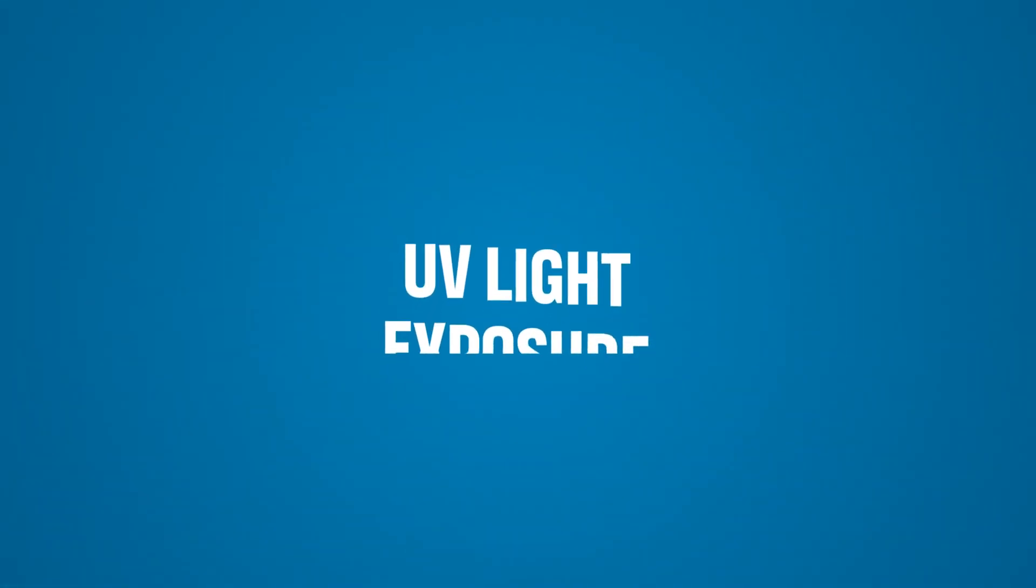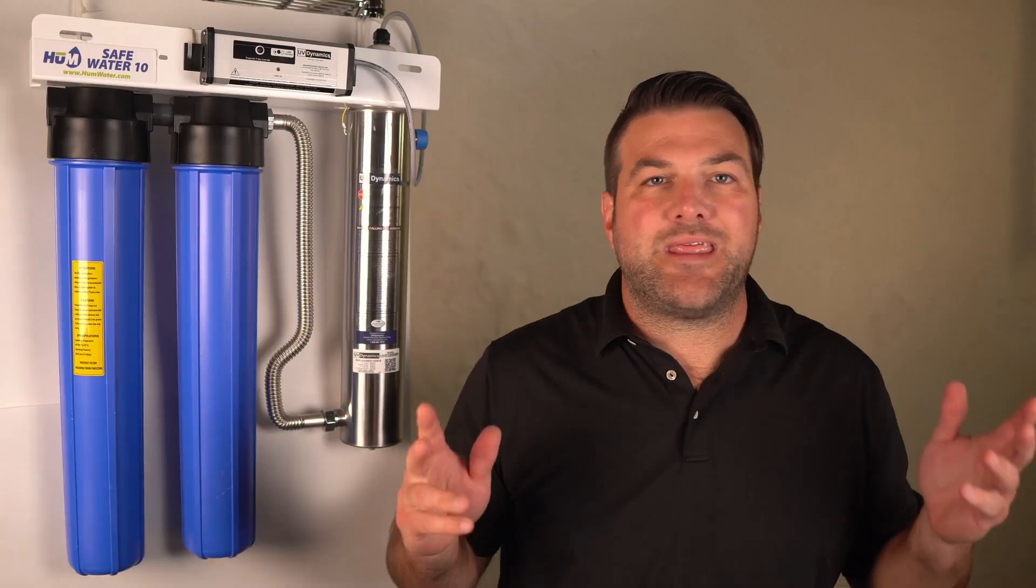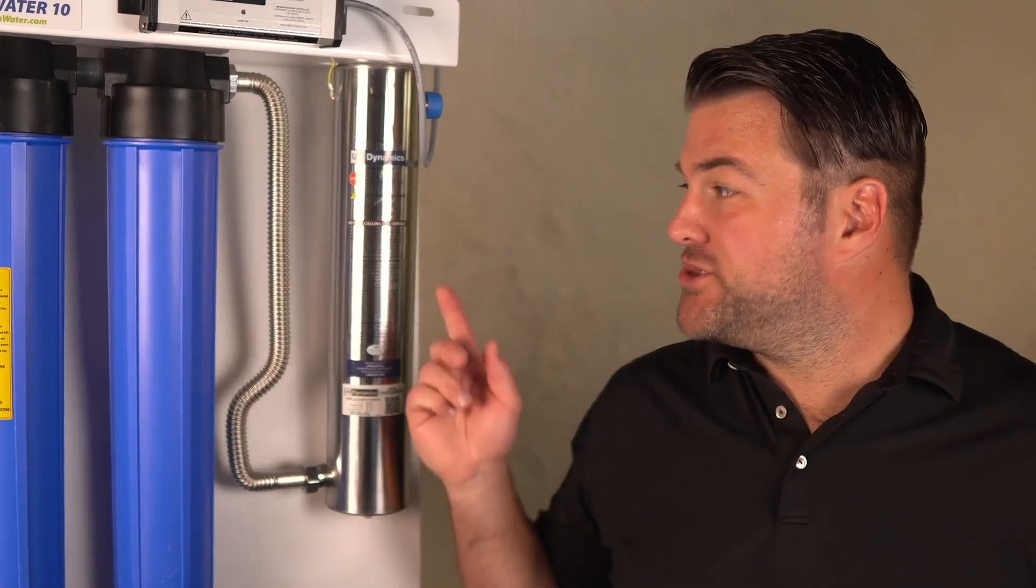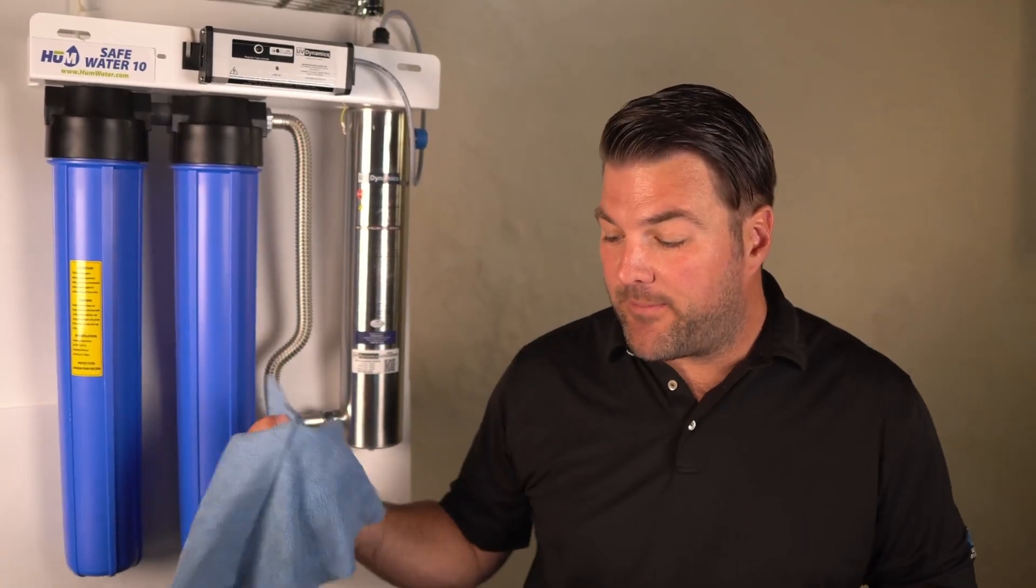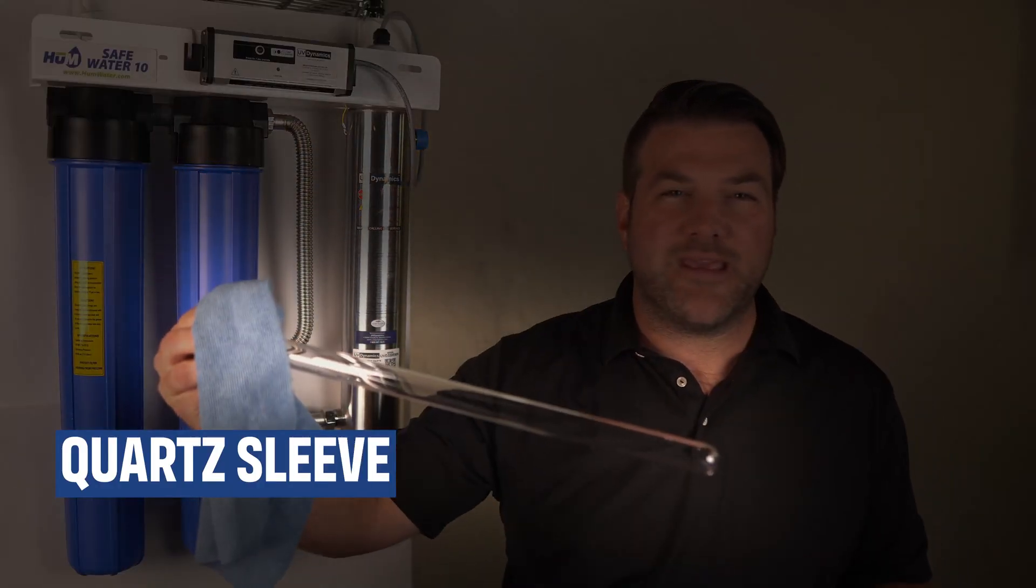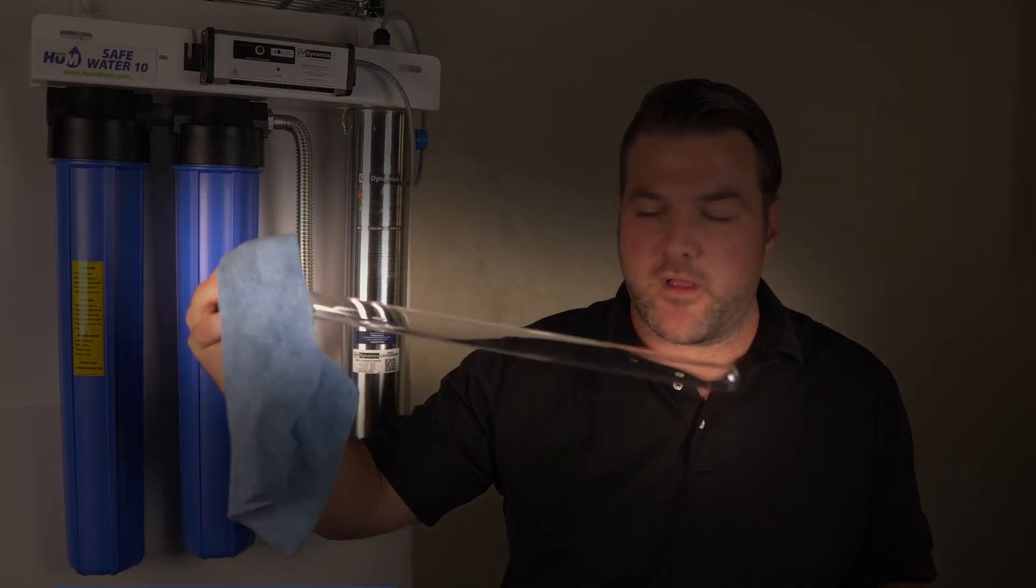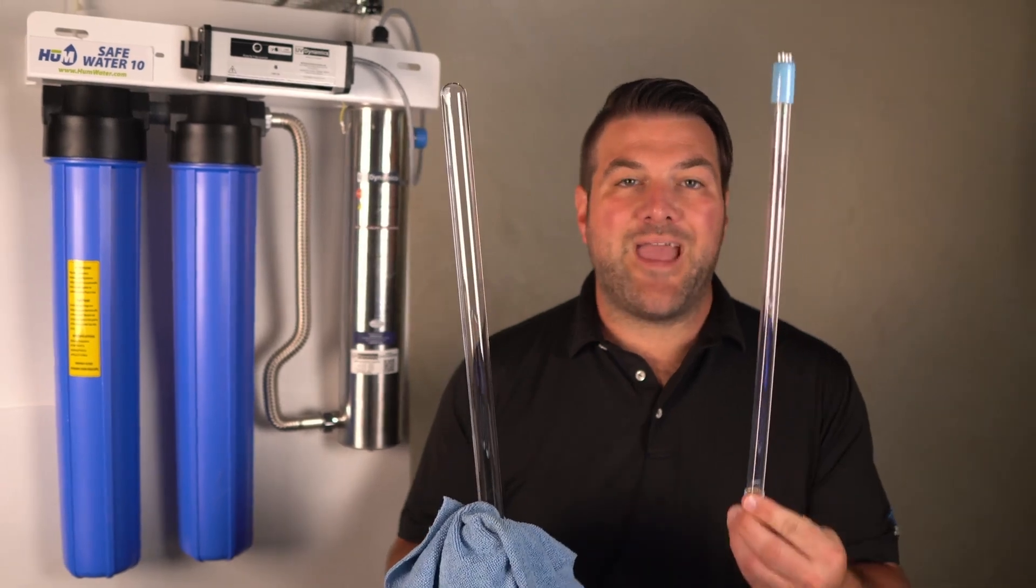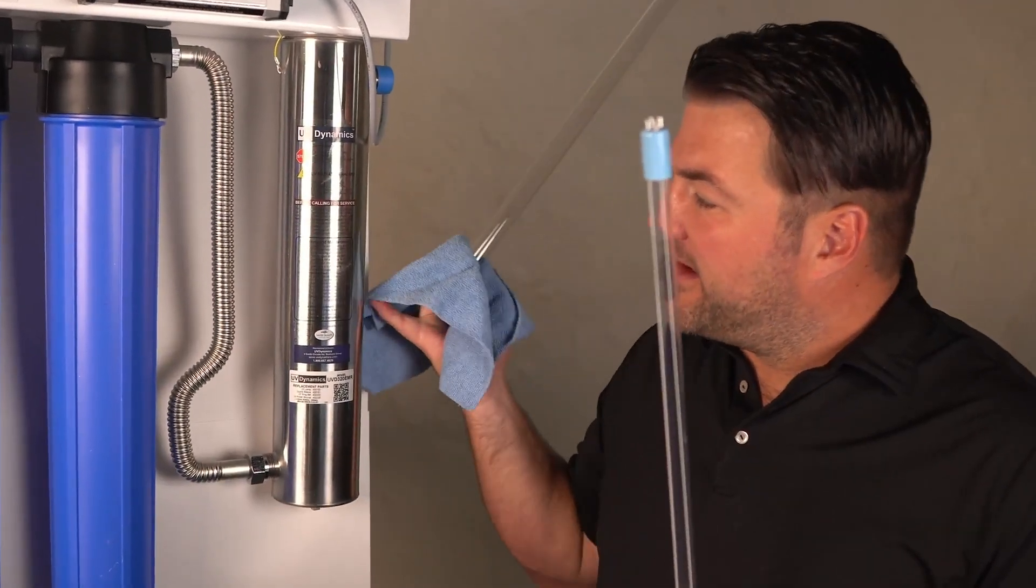Next, UV light exposure. Once the water is pre-filtered, it enters into a UV disinfection chamber right here. There's a UV lamp enclosed in a quartz sleeve. I actually have two examples here. This is what the quartz sleeve looks like. I'm using a rag to hold it just because I don't want to leave fingerprints all over it. Both the quartz sleeve and the bulb are inserted into this chamber. As the water flows around the sleeve, the UV light penetrates the cells of any microorganisms present in the water.